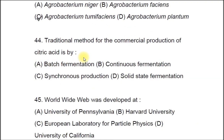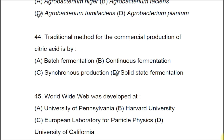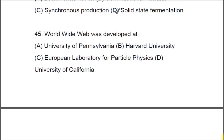Question 44: The traditional method for the commercial production of citric acid is A) batch fermentation, B) continuous fermentation, C) synchronous production, D) solid state fermentation. The correct option is A, solid state fermentation. Actually, it is produced by submerged fermentation.